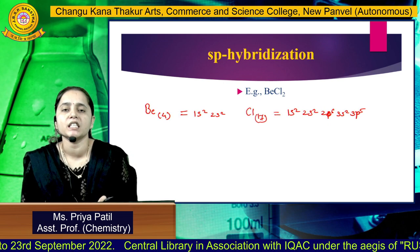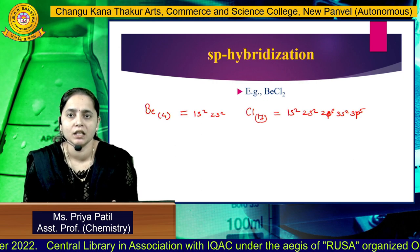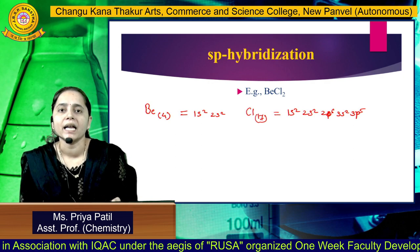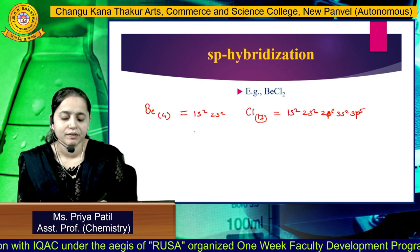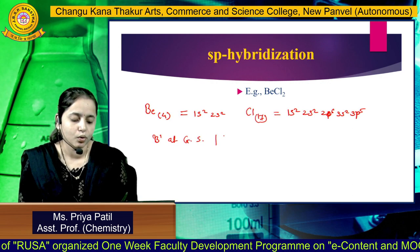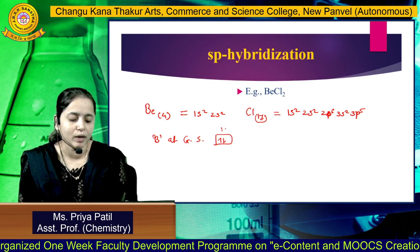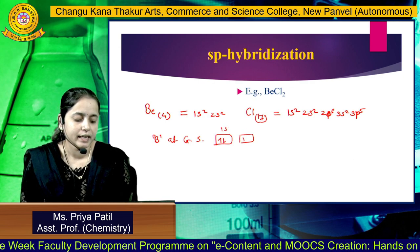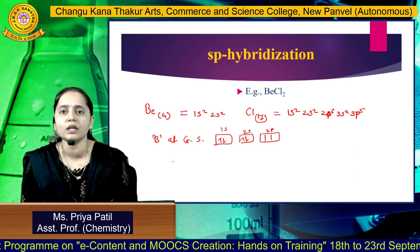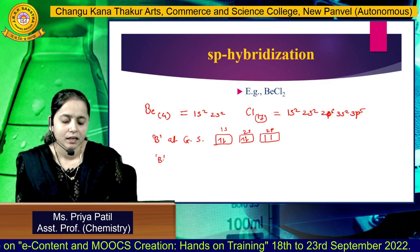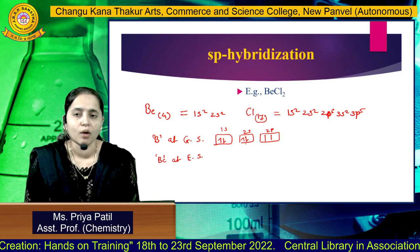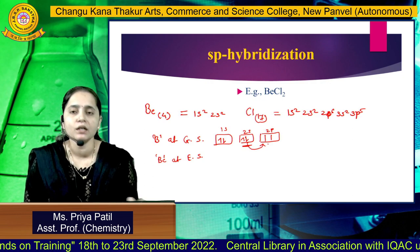Be undergoes SP hybridization, showing two hybrid orbitals. To understand how the S and P hybrid orbitals are formed, we take the valence electronic configuration of Be. At ground state, two electrons are present in the 2S orbital and the 2P orbital is vacant. When Be gets excited, one electron from the 2S orbital gets promoted to the 2P orbital.